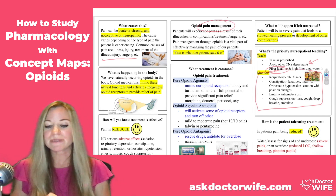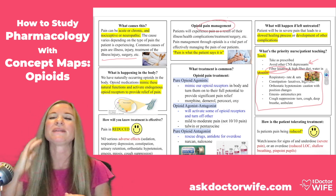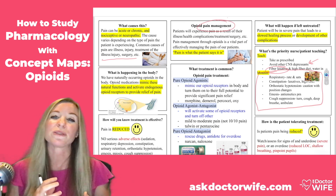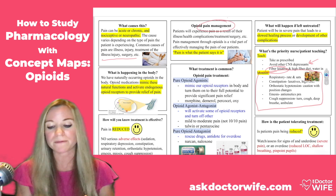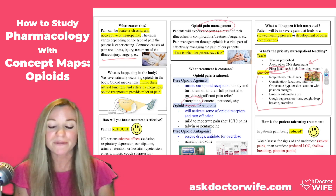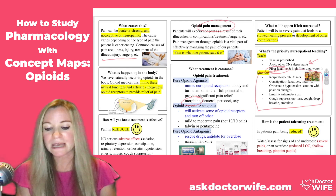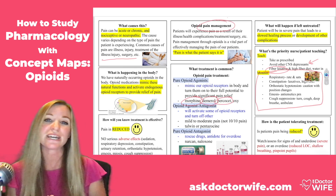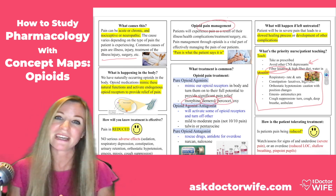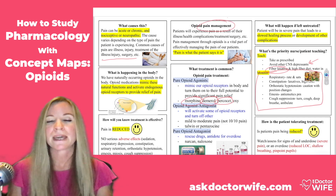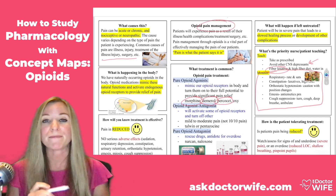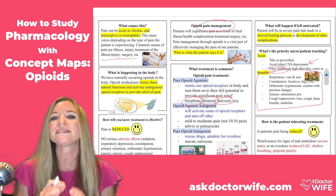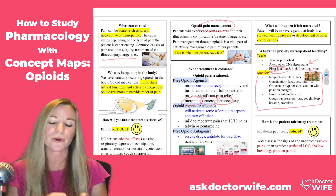Sometimes students are trying to remember how many opioids there are — we have so many. Being familiar with the common types is important. This student has highlighted morphine, which is very common; Demerol, which is meperidine; Percocet, also known as oxycodone. We also have hydrocodone, seen a lot of times in Lortab; hydromorphone, which is Dilaudid; and codeine. These are all examples of opioid pain relievers.